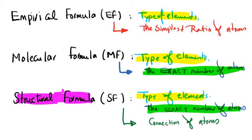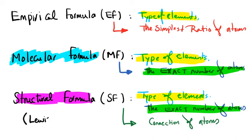The most commonly used formula is molecular formula, used in most lecture classes and the chapters we review here. Empirical formula is used when discovering something new or working on the properties of compounds. A structural formula is also called a Lewis structure, and the next videos will cover Lewis structures and molecular shape or geometry of compounds.